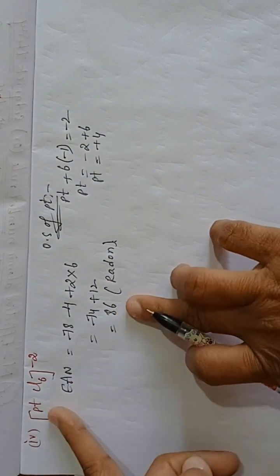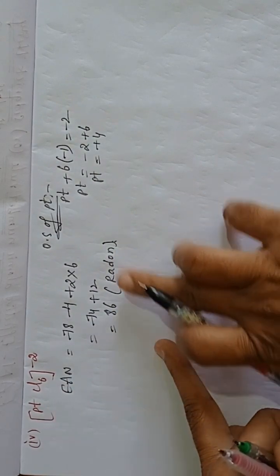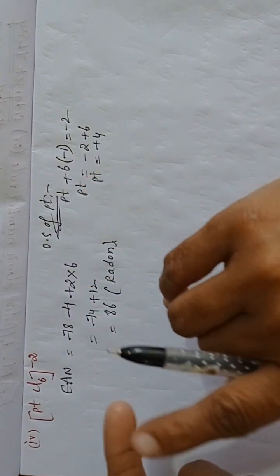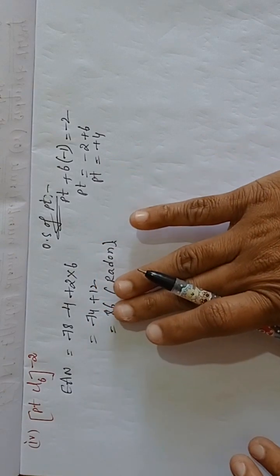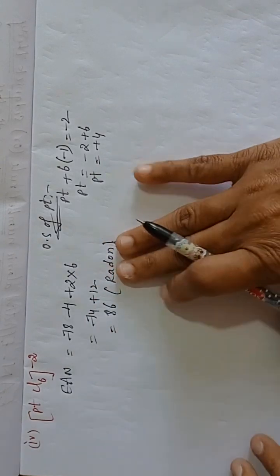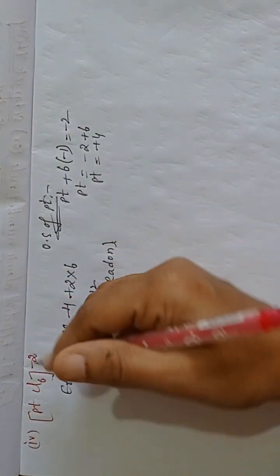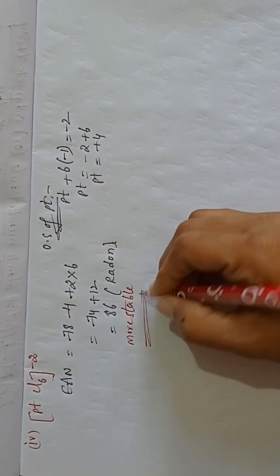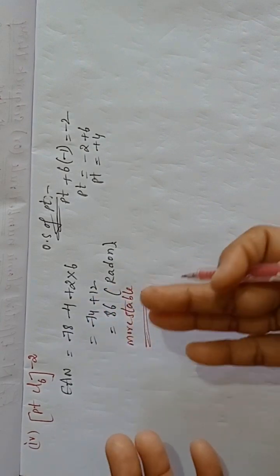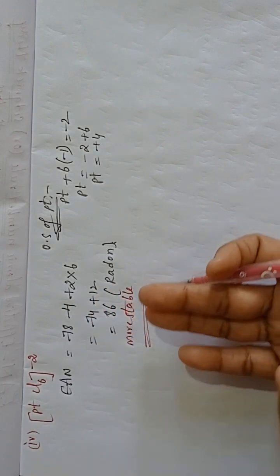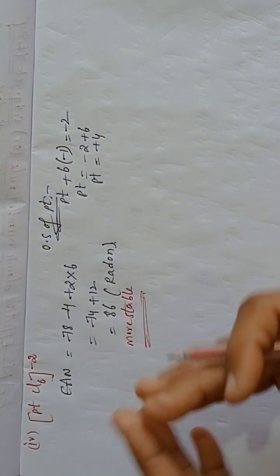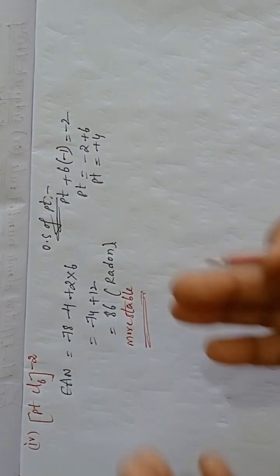EAN value of platinum equals 86, which is the atomic number of radon. The noble gases are helium, neon, argon, krypton, xenon, and radon. Radon's atomic number is 86. So that's why the complex ion [PtCl₆]²⁻ is more stable. From this EAN rule we can determine whether a given complex ion is stable or not.